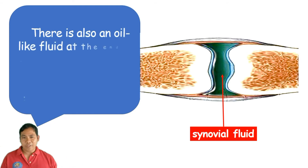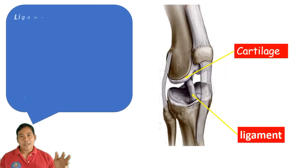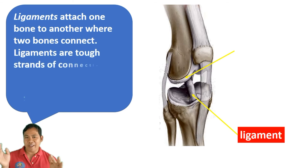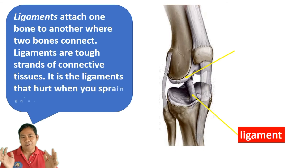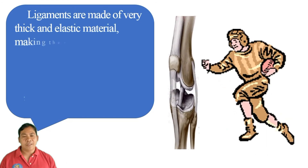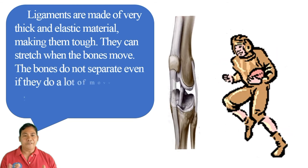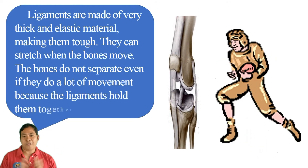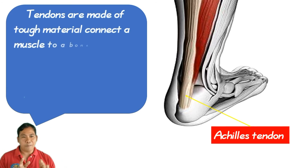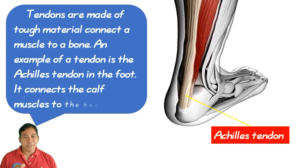There is also an oil-like fluid at the ends of the bones called synovial fluid that lubricates the bone. Ligaments attach one bone to another where two bones connect. Ligaments are tough strands of connective tissue — it is the ligaments that hurt when you sprain an ankle. They are very thick and elastic, making them tough, and they can stretch when bones move. The bones do not separate even during a lot of movement because the ligaments hold them together. Tendons are made of tough material that connects a muscle to a bone. An example is the Achilles tendon in the foot, which connects the calf muscles to the heel bone.